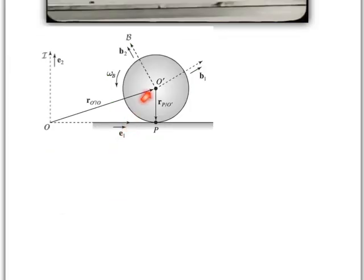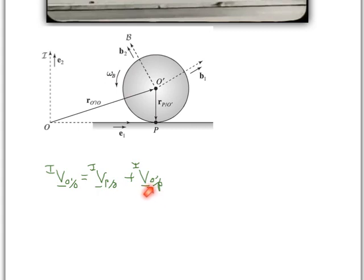Now let's find the inertial velocity of point O', the center of the wheel, using our velocity equation. We start with the velocity of a known point on the wheel — point P — since we defined its inertial velocity as zero via the no-slip condition. Then we add the rotational velocity: the velocity of O' relative to point P as observed in the inertial reference frame. This has the form: velocity of P plus omega cross r(O' with respect to P).